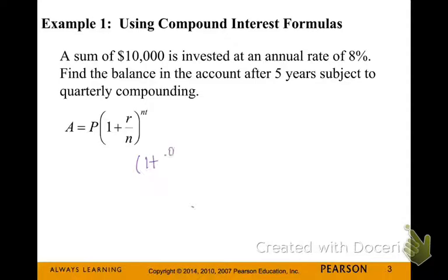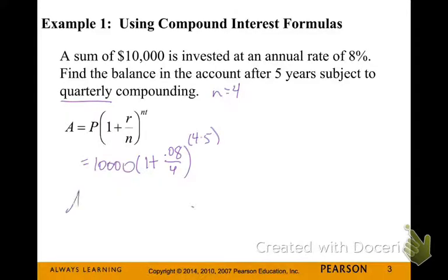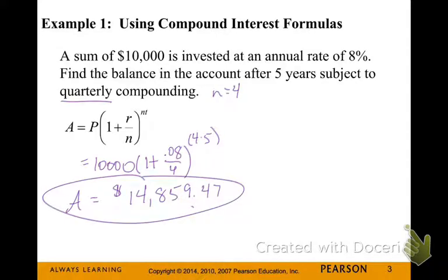Plugging in our values, note that N equals 4. So our principal is $10,000, times 1 plus our rate as a decimal, 0.08 over 4, raised to 4 times the number of years, 5. You can put all that in your calculator at once, and you'll get $14,859.47.